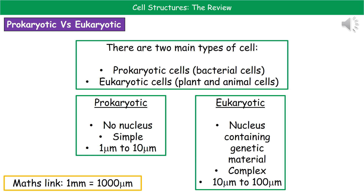Welcome to our review on cell structures. The first thing we need to understand is that when we're talking about cells they come in two types. We've either got prokaryotic cells, which are bacterial cells, or we've got eukaryotic cells, which are plant and animal cells.